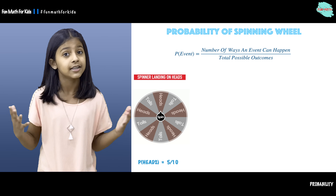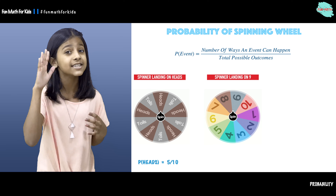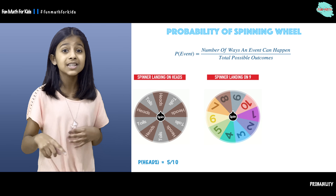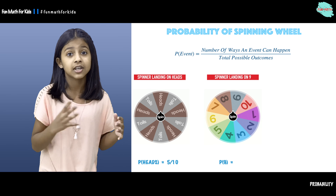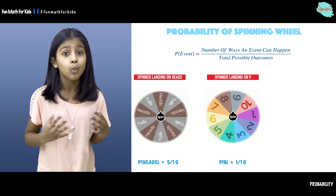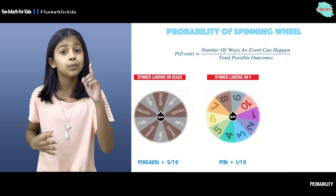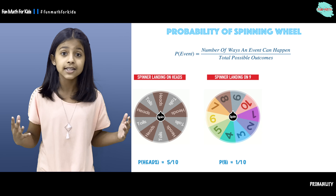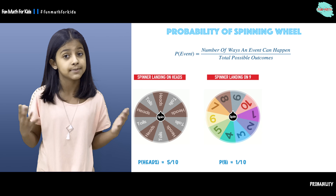Let's talk about the second example. The second example is: what is the probability of the spinner landing on 9? Here we have a spinner with numbers from 1 to 10. The probability of the spinner landing on 9 is 1 over 10, because there is only one way the spinner can land on 9 and 10 total possible outcomes.